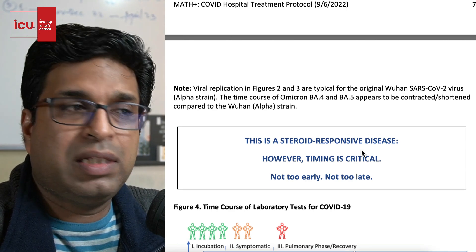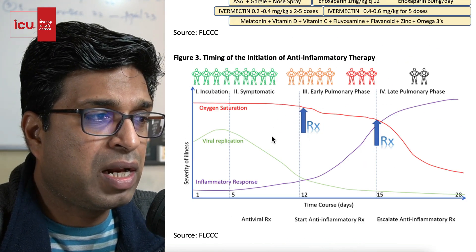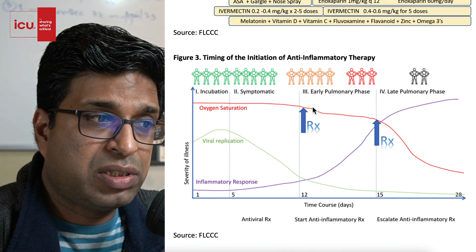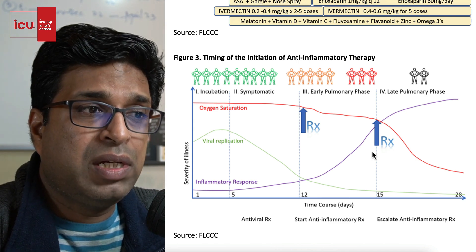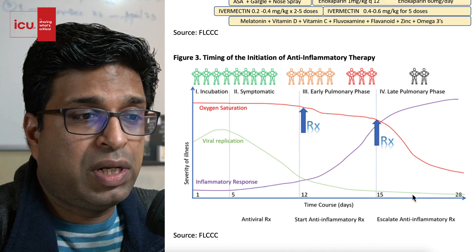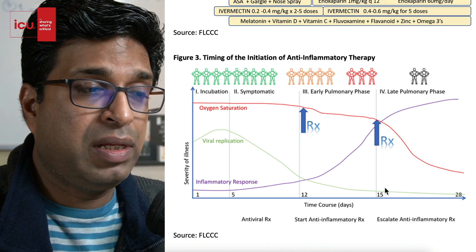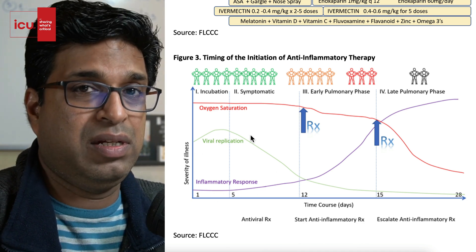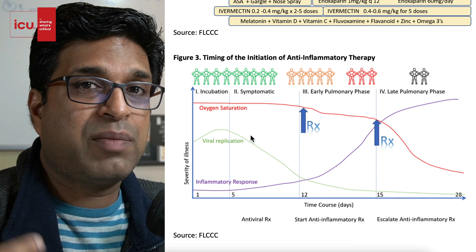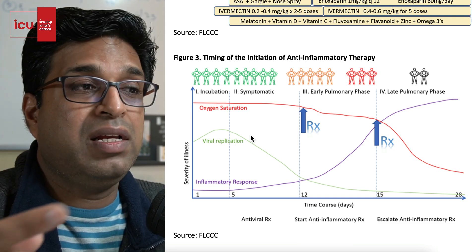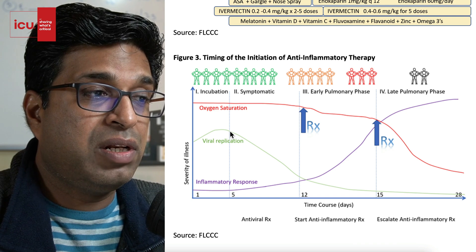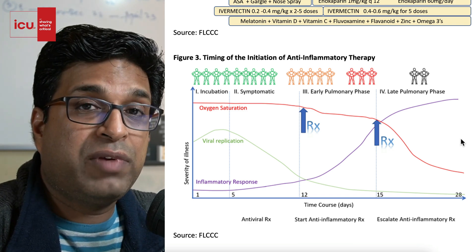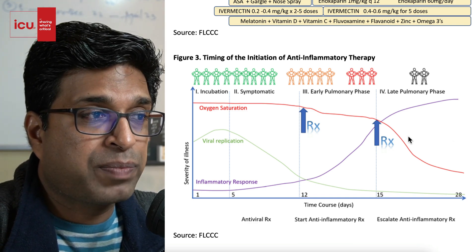The key message is that timing is critical in COVID-19 treatment. In the early stages, give antiviral therapy. In the early pulmonary stages where oxygen saturation is dipping, give anti-inflammatory therapy — steroids. When saturation starts dipping fast, escalate the anti-inflammatory therapy. Importantly, if you give anti-inflammatory therapy too early when viral replication is still ongoing, viral replication can go unchecked and the patient may rapidly progress into the late pulmonary phase and deteriorate very fast.